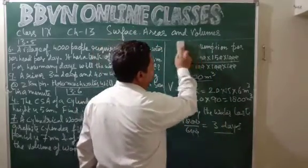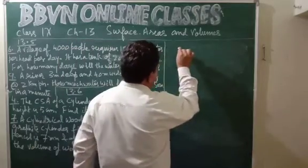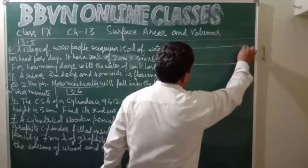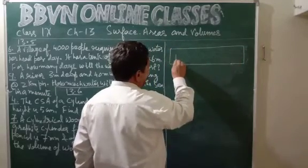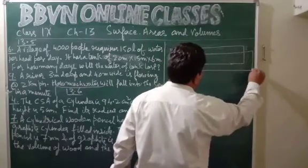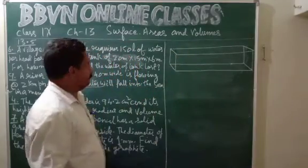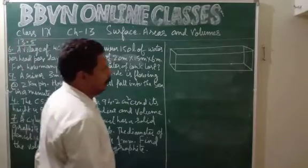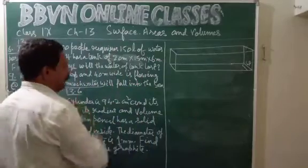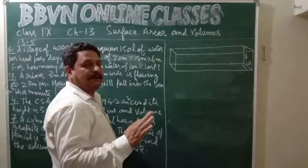Let us understand it in a better manner with a diagram. This is how, to some extent, the shape of the river will be. It says 3 meters deep and 40 meters wide — this is the width of the river, given as 40 meters, and its height is 3 meters. Depth of the river means the height of this cuboid, given as 3 meters. Water is flowing at the rate of 2 kilometers per hour.